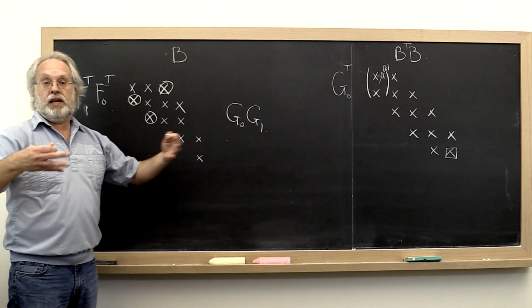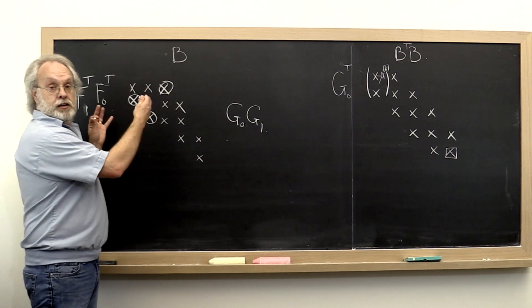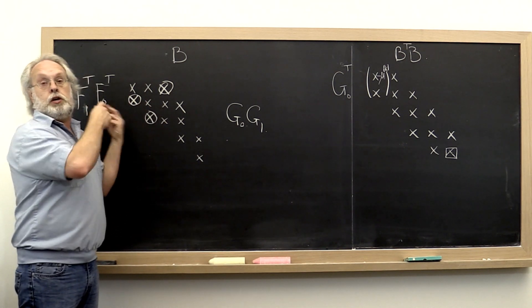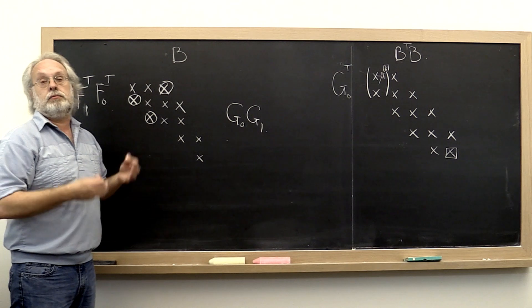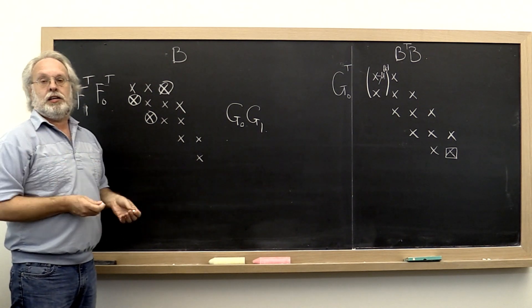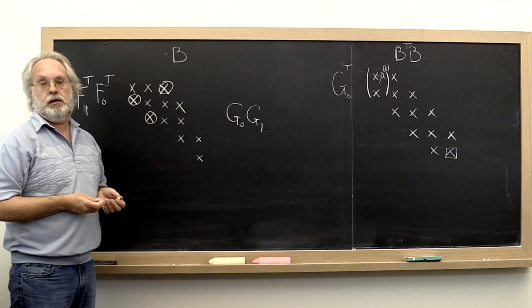then we have our singular value decomposition first of our square matrix. And if we then take it back to matrix A, we have the singular value decomposition or something that's like the reduced singular value decomposition for our original matrix A.